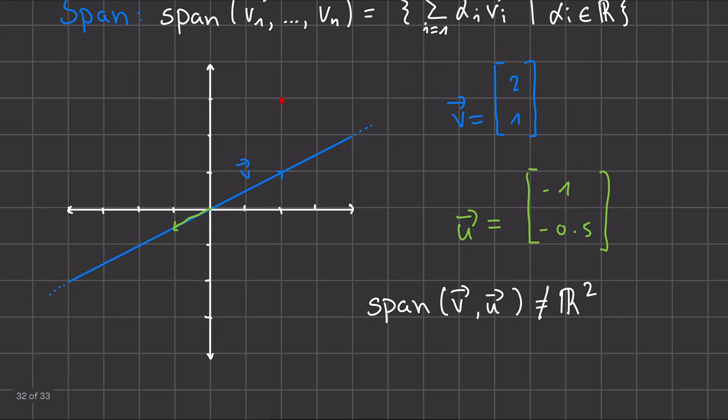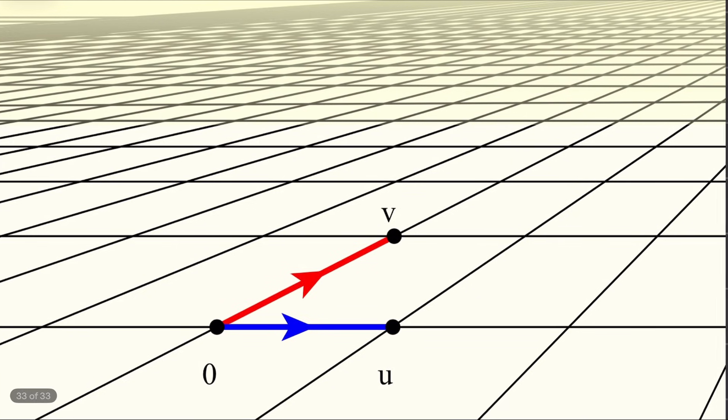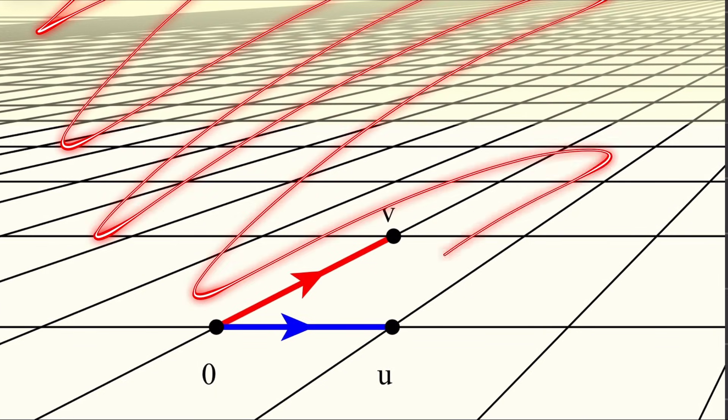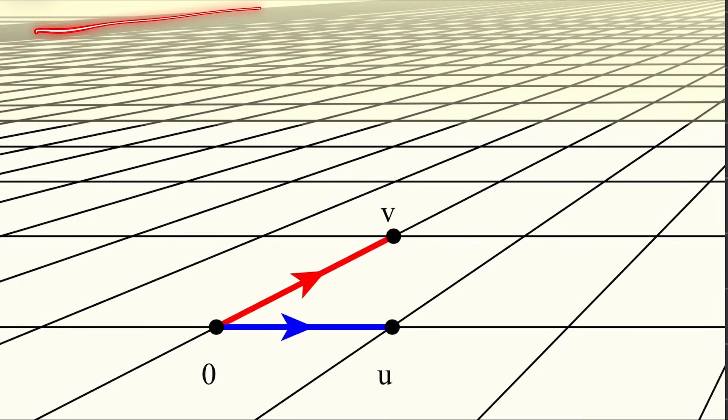So we see that in the R² space, we can have a line as our span, and we can also have the entire space as our span. In fact, we can also have just the zero point as our span. That might just be a bit confusing, so I'll leave it out here. In our R³ space, we can again have the entire R³. We can have just a plane as it is here, or we can also have a line.